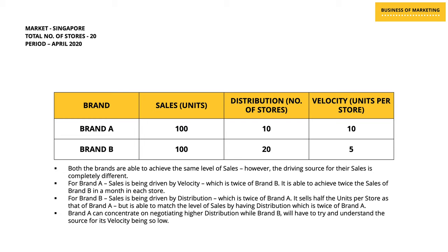Therefore, we can conclude that the sales of brand B are being driven by distribution. What it needs to focus on is why the velocity is so low and what it needs to fix so that demand for the products can improve in the market. At the same time, when it comes to brand A, the velocity is good but the distribution is low — so brand A needs to focus on how it is going to increase its distribution.